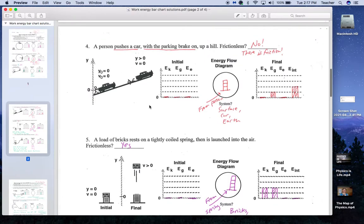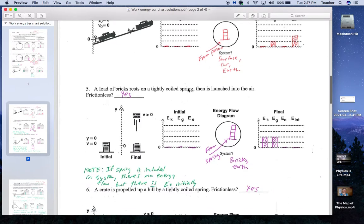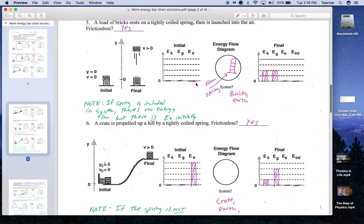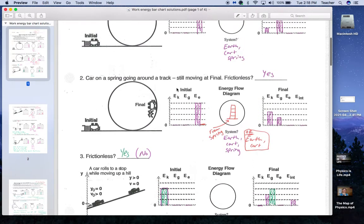Number five, a load of bricks on a tightly coiled spring then is launched into the air. So I said this was frictionless. My system was bricks and Earth. I did not have the spring in the system. So I had zero, zero, zero, some bars from the spring. And since it's moving here still, as it's moving upward, I had some gravitational and some kinetic energy. If the spring is included in the system, then however many total bars you have would be over here as elastic.